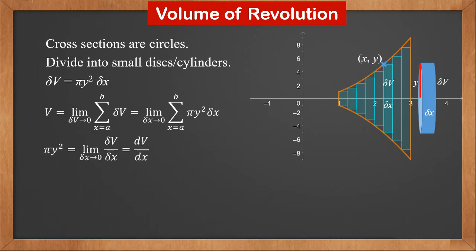So pi y squared is the limit of delta v over delta x when delta x approaches 0, and this is dv over dx. So V is the integral of pi y squared dx from a to b.